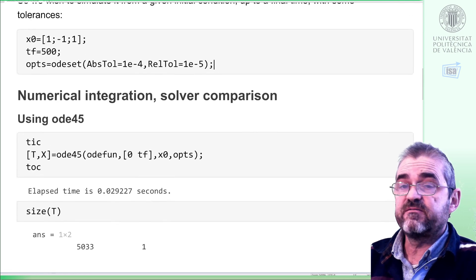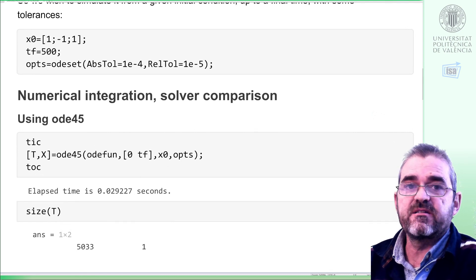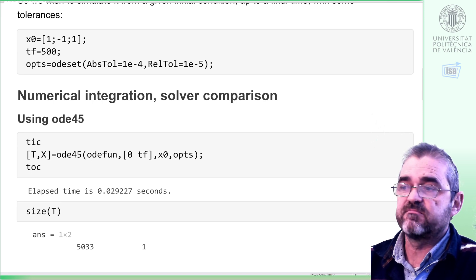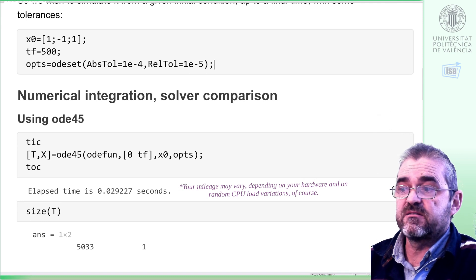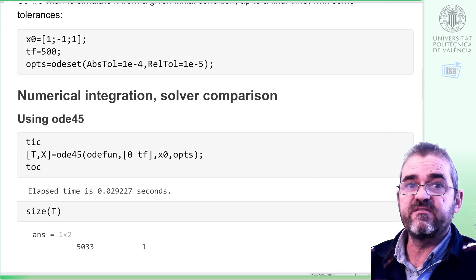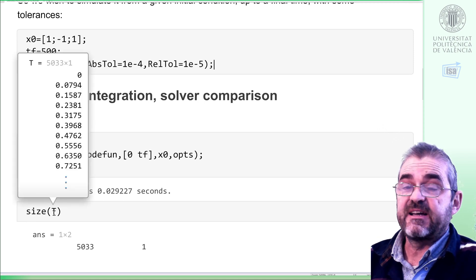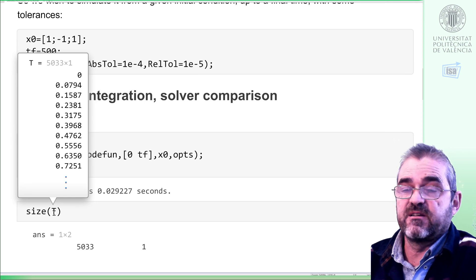So we will now execute and see how the solvers behave. Then, ODE45 is the first solver that MATLAB recommends as the basic first choice. Try this, and if this doesn't suit you, then try something else. In this case, it took 29 milliseconds, 5000 points, to achieve this accuracy, and the sampling period, at least in the initial steps, because it's a variable size integration.